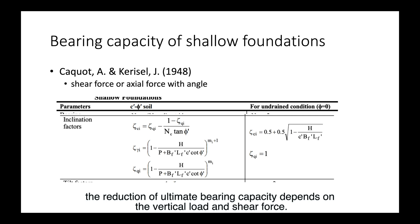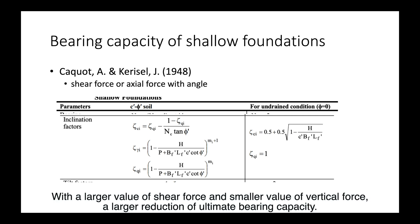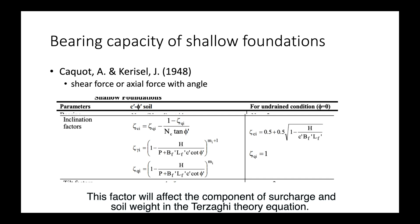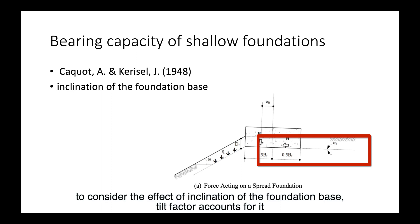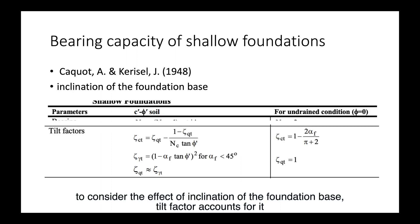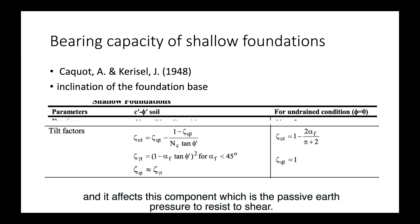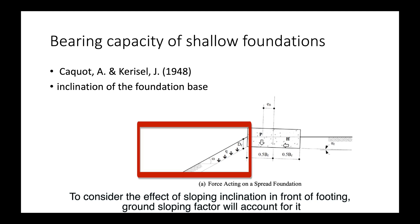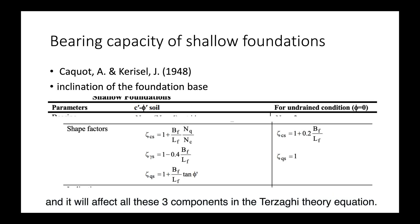The reduction of ultimate bearing capacity depends on the vertical load and shear force. With a larger value of shear force and smaller value of vertical force, there is a larger reduction of ultimate bearing capacity. This factor affects the surcharge and soil weight components in the Terzaghi theory equation. To consider the effect of inclination of the foundation base, a tilt factor accounts for it and affects the passive earth pressure component. To consider the effect of sloping inclination in front of the footing, a ground sloping factor will affect all three components in the Terzaghi theory equation.